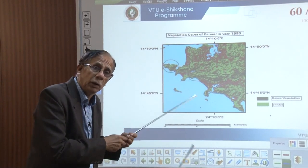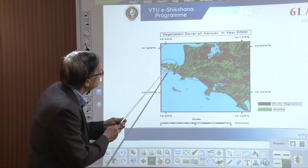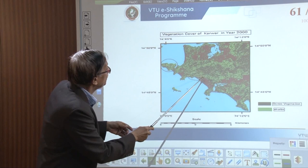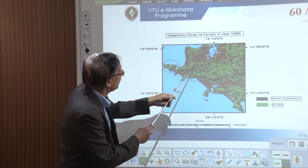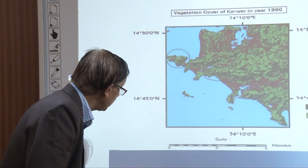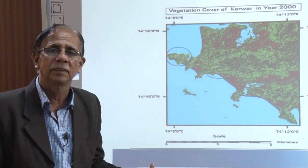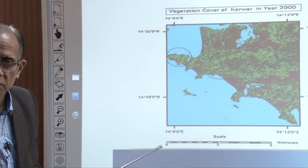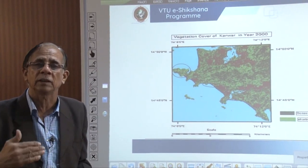The image was obtained in 1990. I focus on the same area — see how much the dark green color has diminished. These were the thick forest areas. Now in this image, the dark green color has disappeared. This is the image of 2000, meaning in those 10 years, so much deforestation has taken place.